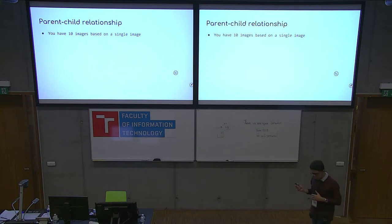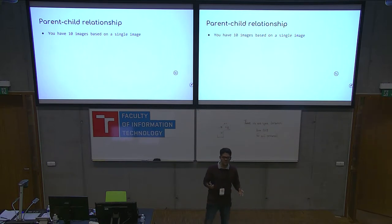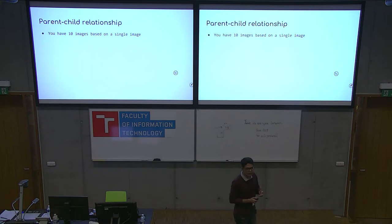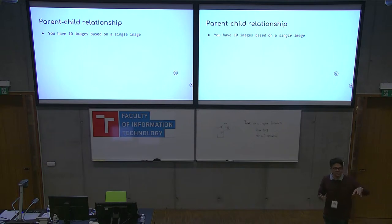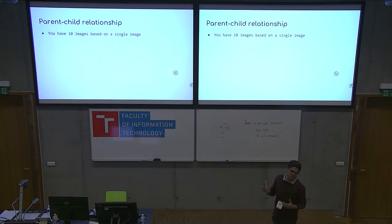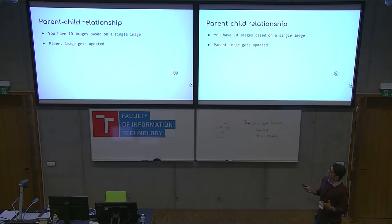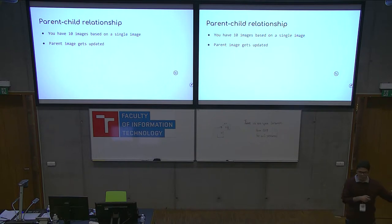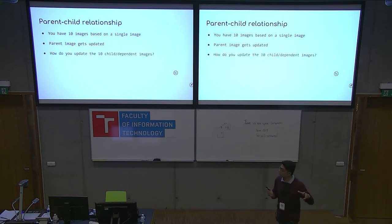Coming to one of the most important features, which is the parent-child relationship. For all those people maintaining container images: there might be a scenario where you have 10 container images all dependent on the same parent image — say CentOS latest — and container images like HTTPD, NGINX, or Node.js are all dependent on it. This is a very common scenario we see in our pipeline service. So you've got 10 container images, the parent image gets updated — how do you exactly rebuild and update the 10 child images?